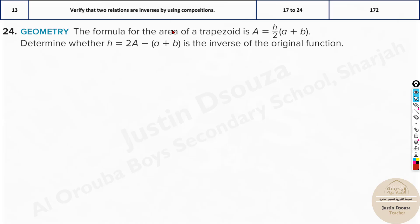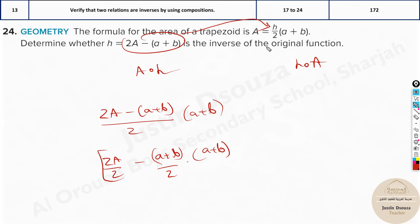And over here another similar one. The formula for the area of a trapezoid A is given over here. Determine whether the height is inverse. What do you do? Same thing. Compose A composition of h, and then h composition of A to just double check it. In this case, whatever h is there, I will just substitute it over here. So it is 2A minus (a+b) divided by 2 into (a+b). Instead of h, what did I do? I substituted this. Let me split this out. Here it will be 2A/2 and this is going to be minus (a+b)/2, and over here we have (a+b).